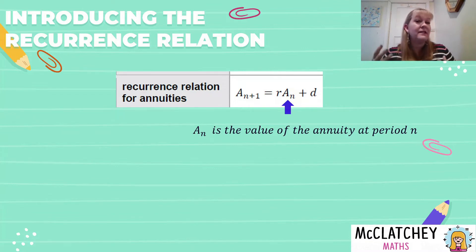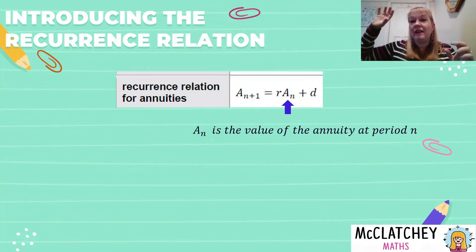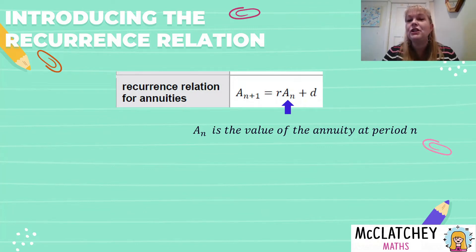Now I've seen other formula sheets, they have things like P for payment. It doesn't really matter what letter it is, you just need to remember it's the amount that's being added. Okay, we've also got this term here, A with a subscript of N. Now that's not a power of N, it's a subscript, it's lower.